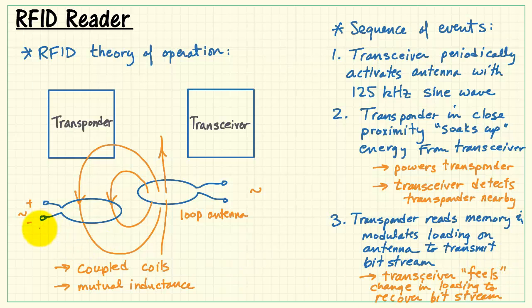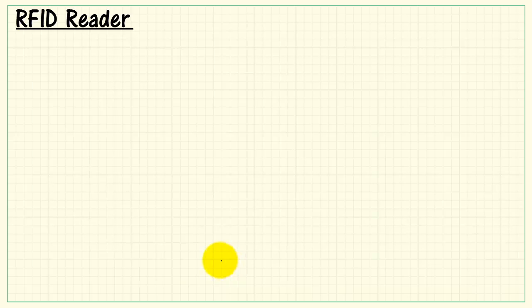Now, earlier I said that the transceiver can feel what's happening on the other side. Well, if we use a switch to alternately change the loading on that transponder coil, then that change in loading can be felt back at the transceiver. And that's how we communicate from transponder back to the reader.